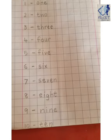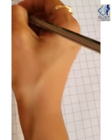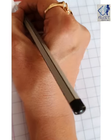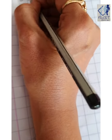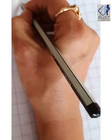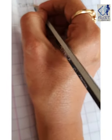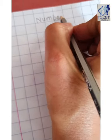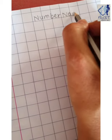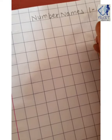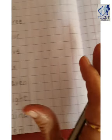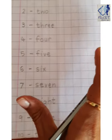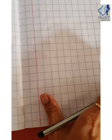And children, same thing. You have to write on this page also. So write the date and the day. Same heading you have to write. Number names 1 to 10. And then you have to write what we have written on this page. Same thing you have to write here also.